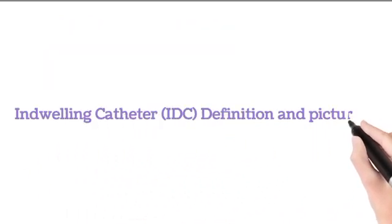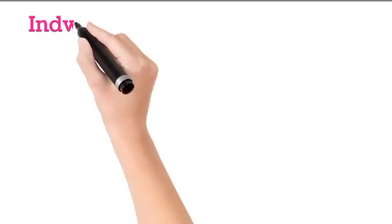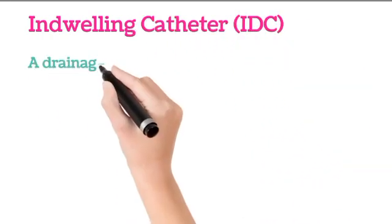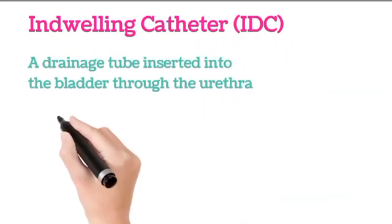Indwelling catheter (IDC) definition and pictures: A drainage tube inserted into the bladder through the urethra.